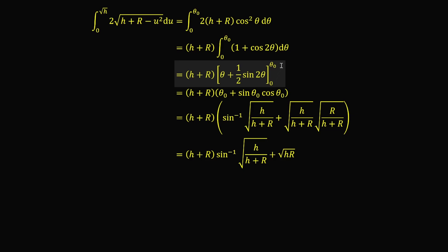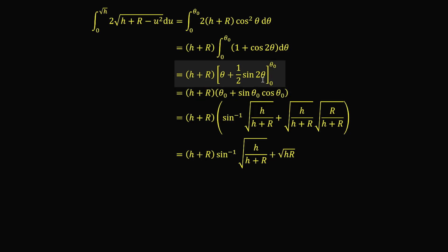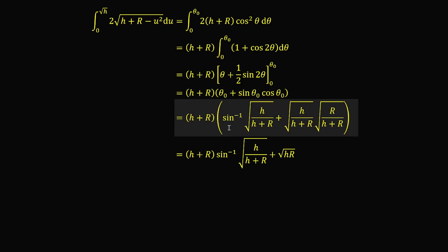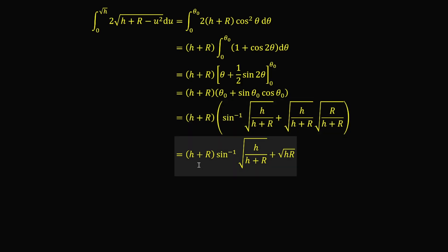We evaluate the antiderivative at θ₀ and 0 and take their difference by the fundamental theorem of calculus. When θ = 0, the expression is 0. So we have (h + r)(θ₀ + ½ sin 2θ₀), which by the double angle formula is (h + r)(θ₀ + sin θ₀ cos θ₀). Plugging in θ₀ = arcsin(√(h/(h+r))) and cos θ₀ = √(r/(h+r)), and simplifying, we get (h + r) arcsin(√(h/(h+r))) + √(hr).